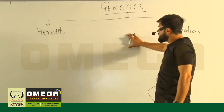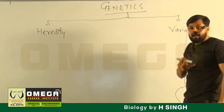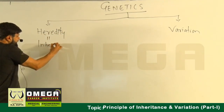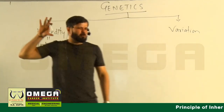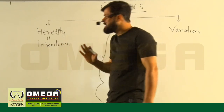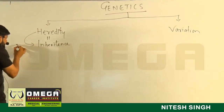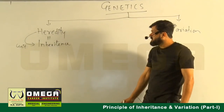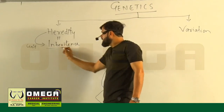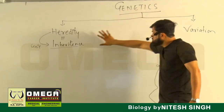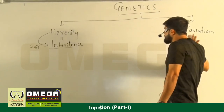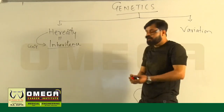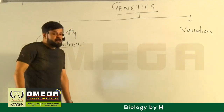So you are looking at genetics in two branches: heredity and variation. We also call heredity by the name 'inheritance.' What do you mean by inheritance?